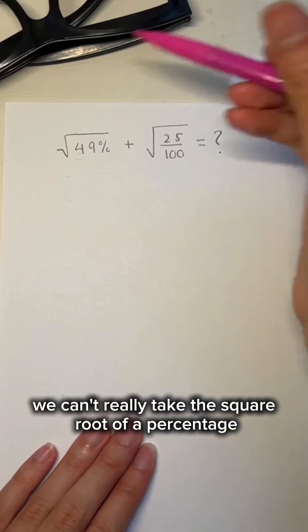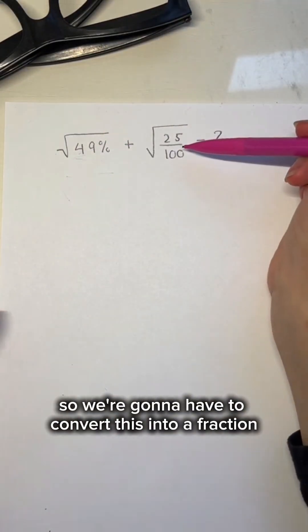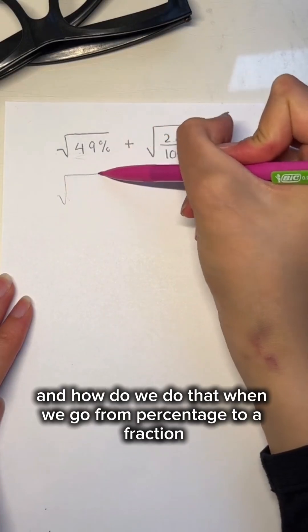We can't really take the square root of a percentage, so we're going to have to convert this into a fraction. And how do we do that? When we go from percentage to a fraction,